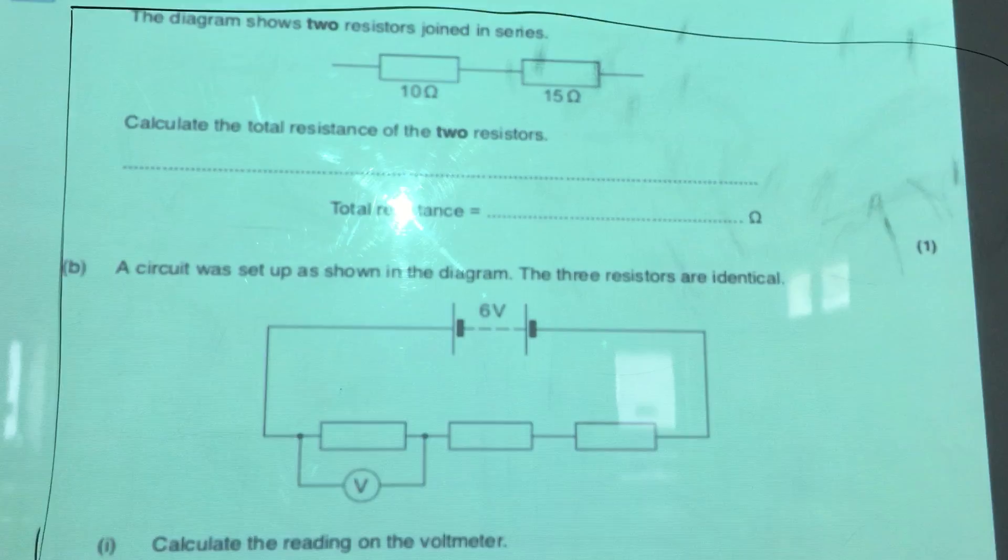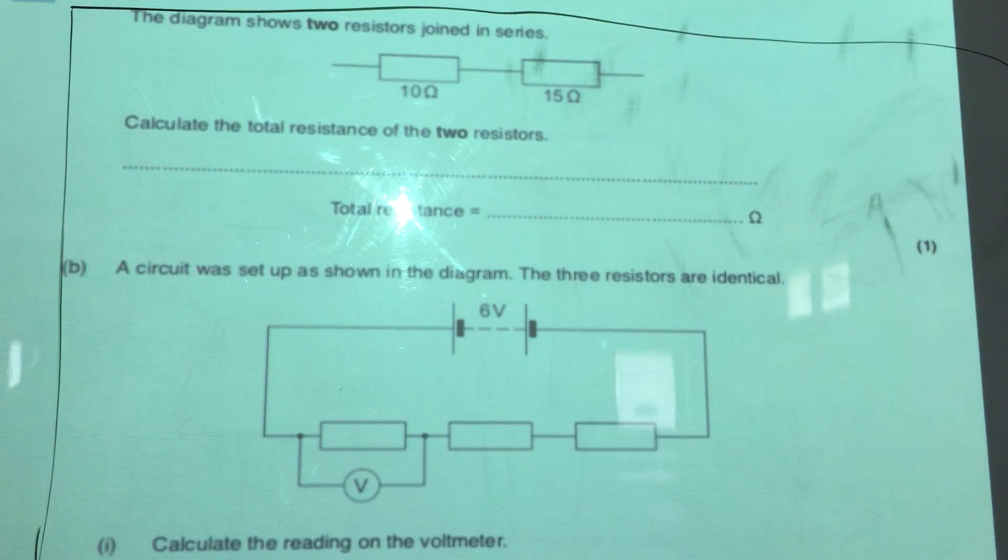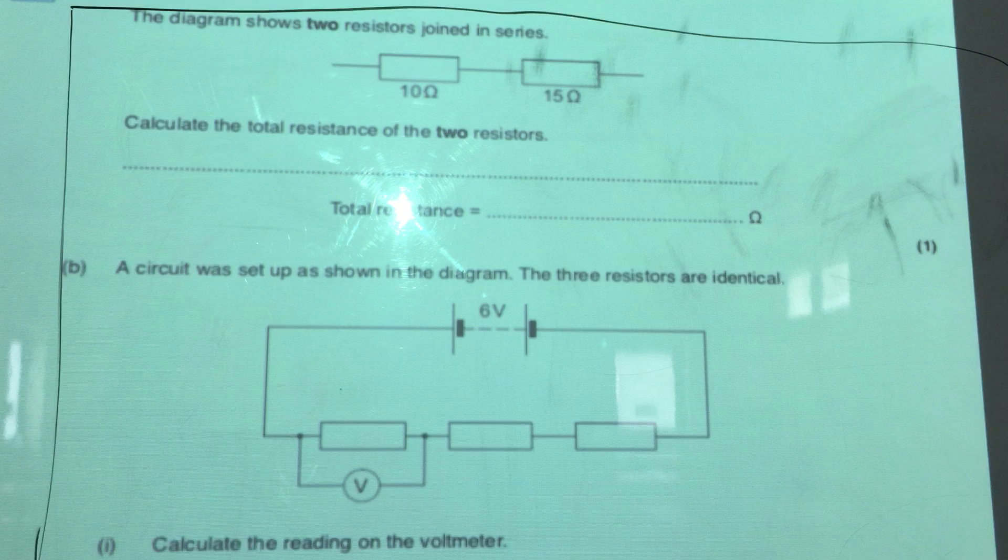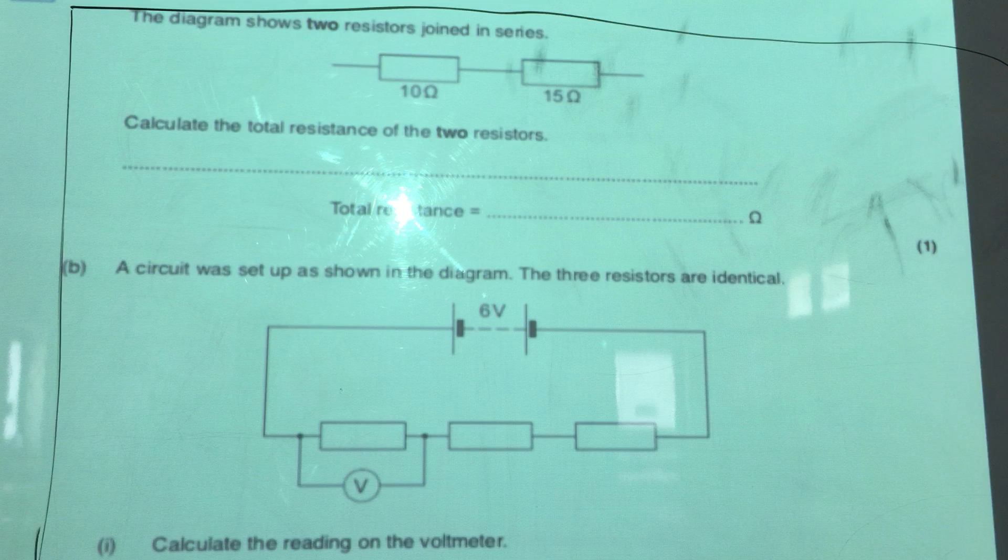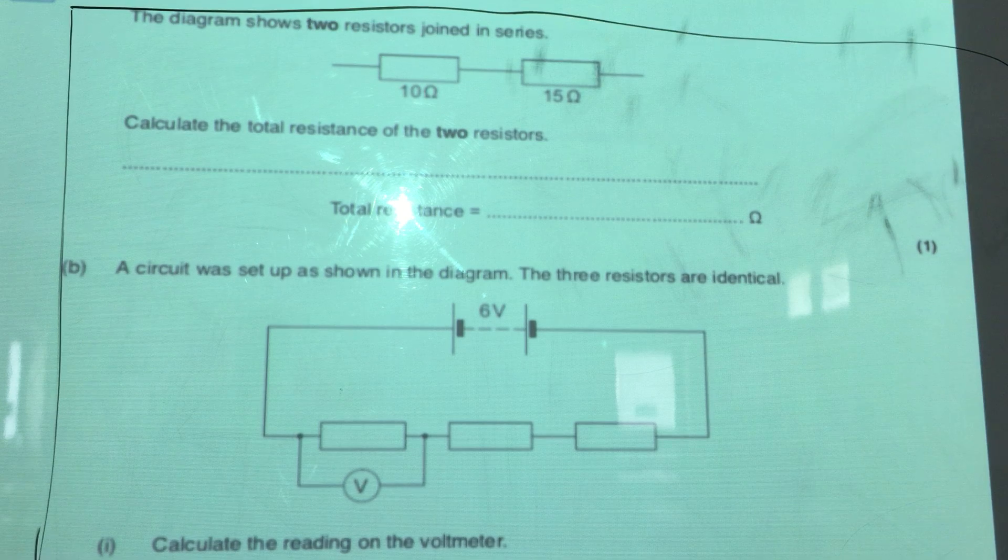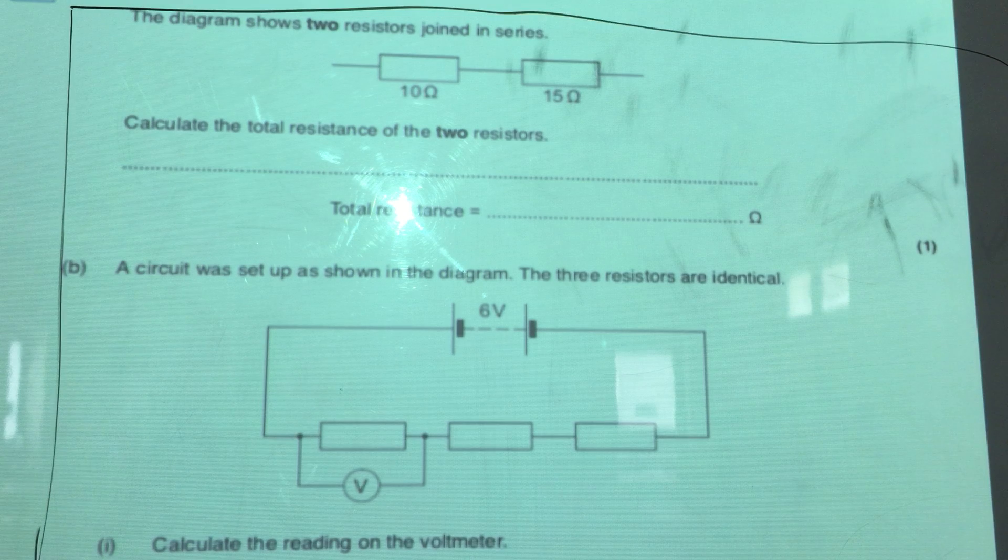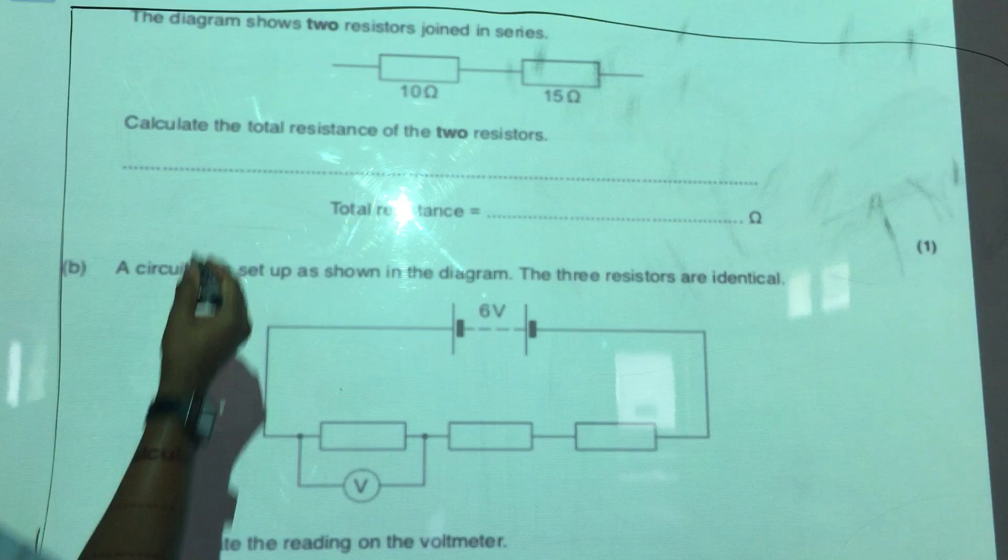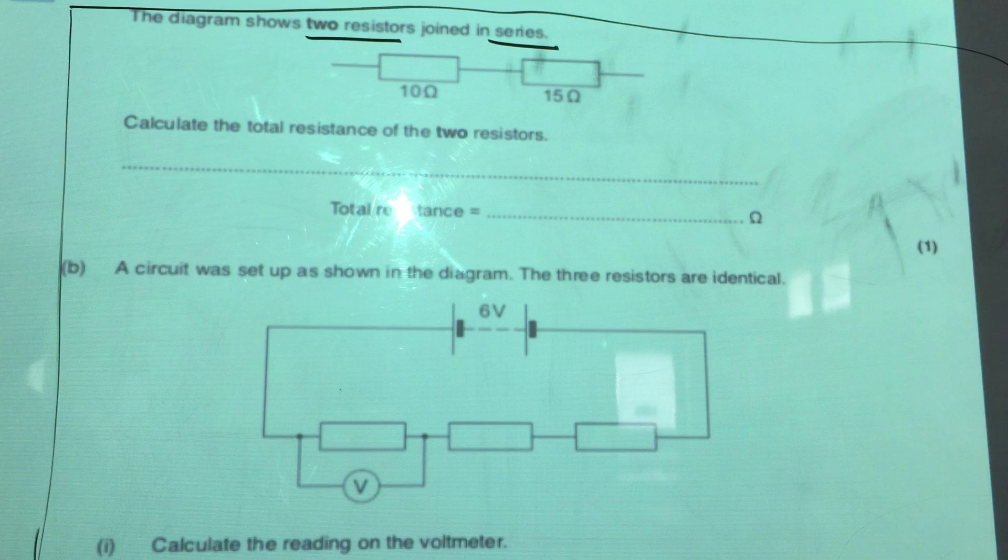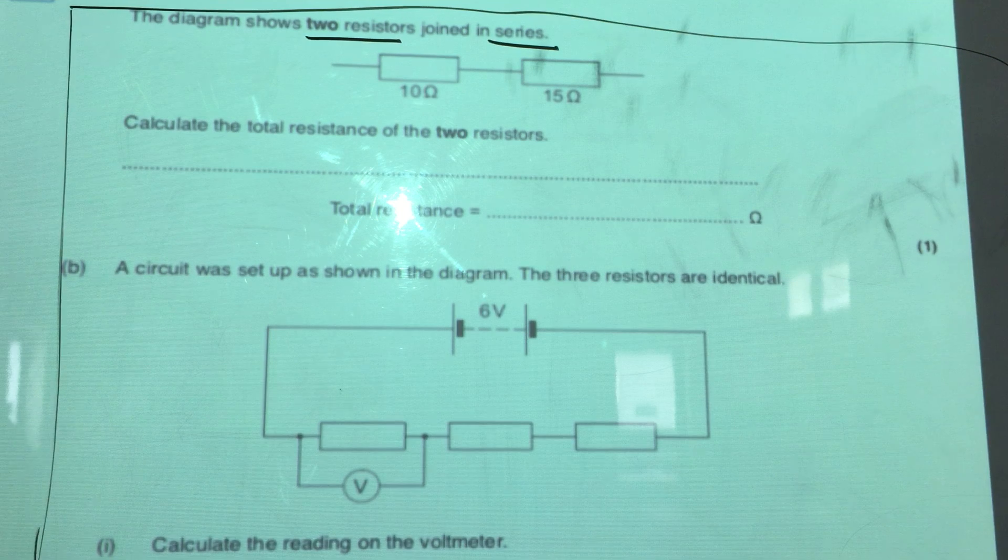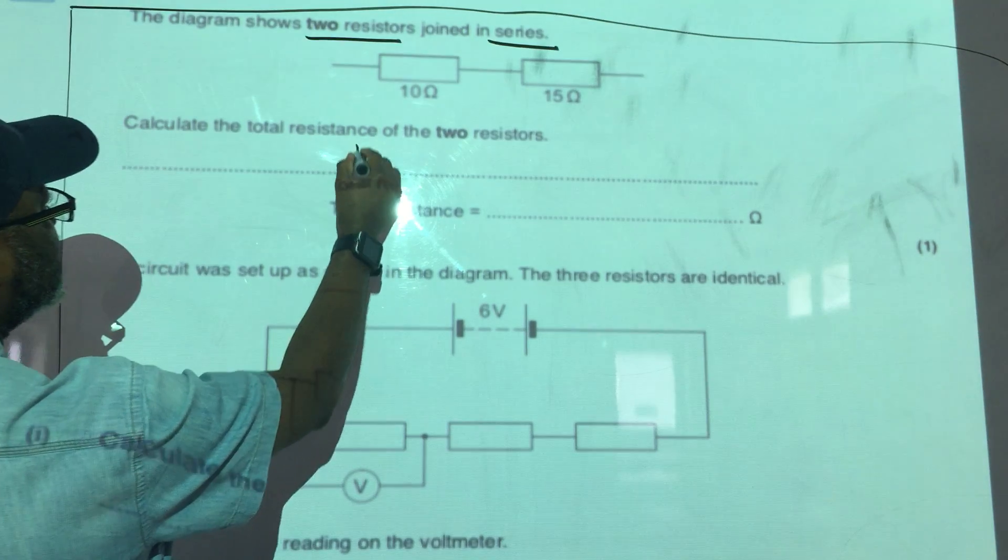The diagram you see shows two resistors that are joined in series. So that is the first thing to notice: two resistors joined in series. We're asked to calculate the total resistance of the two resistors.